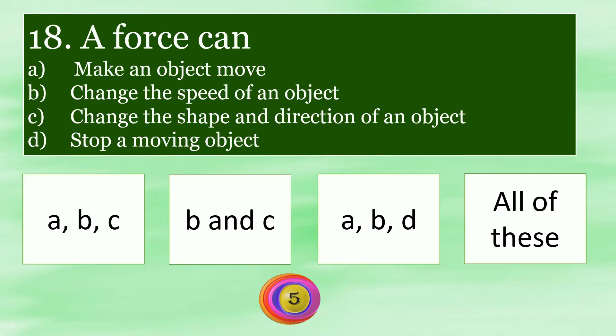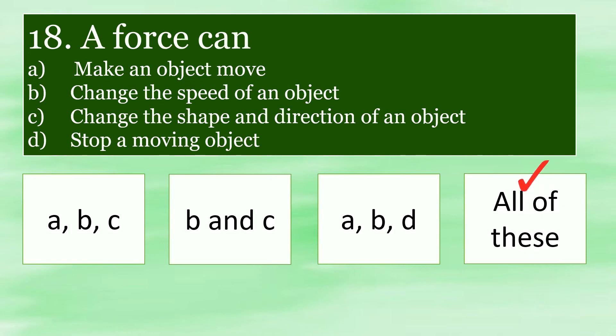A force can: A) make an object move, B) change the speed of an object, C) change the shape and direction of an object, and D) stop a moving object. The answer is all of these.